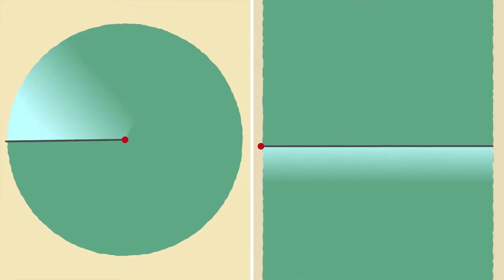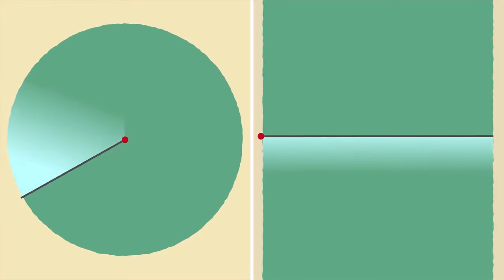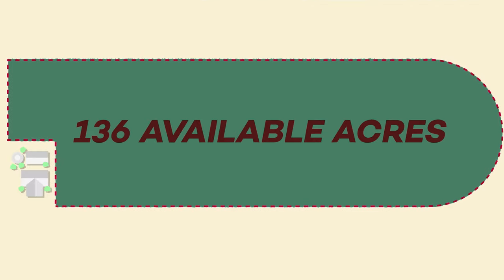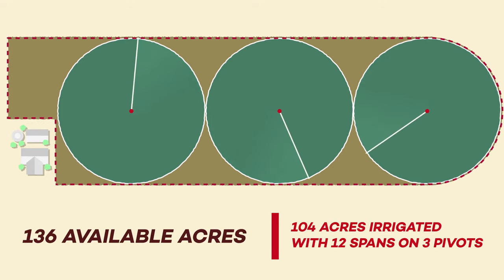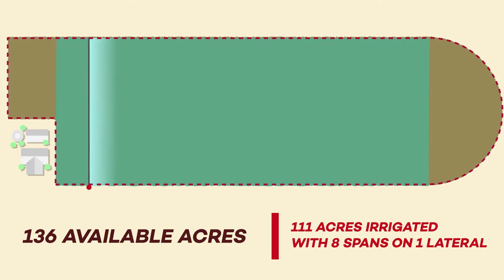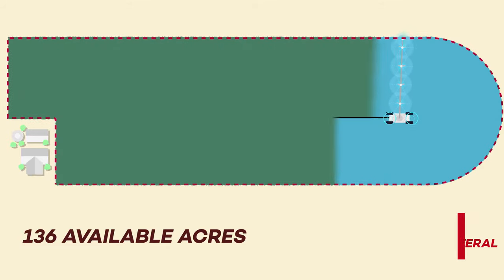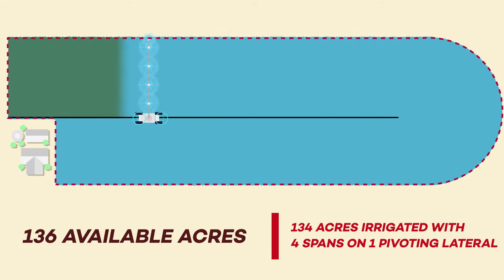Center pivots and lateral move systems are often great for traditional fields. But when you really need to make the most of every inch of land, such as with high-value crops on a large or irregular field, a pivoting lateral could be the right equipment for you.